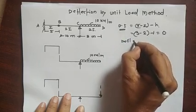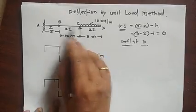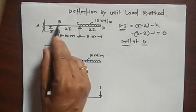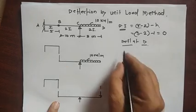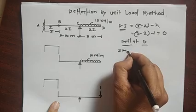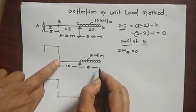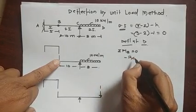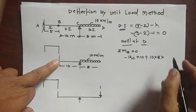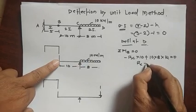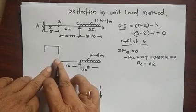Our aim is to find the deflection at D. First, we find the reactions. Simplifying the beam, there is one reaction at each support. Taking moment at B (ΣMB = 0): the distance is 10 and 8, so minus RC × 10 plus 10 × 8 × (10 + 4) = 0, giving RC = 112.